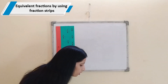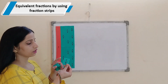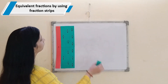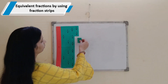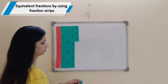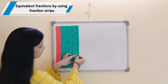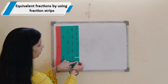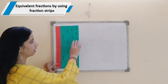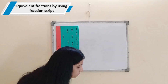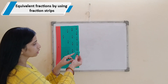Now this has been divided into 8 equal parts. So now the value of each part will be 1 by 8. These 8 one-eighths are forming a whole. Now this has been divided into 10 equal parts. So now each part is smaller. You can see 1 tenth is smaller than 1 eighth.